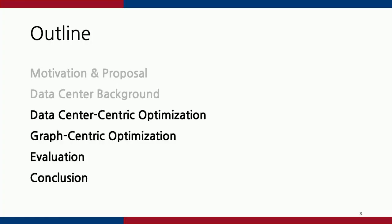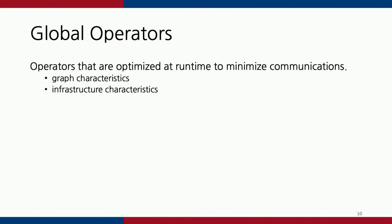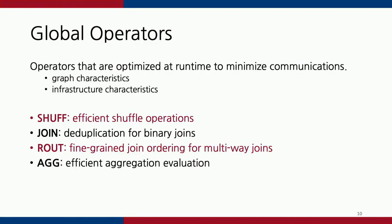I'm going to show how we optimize query execution for large graph queries by including this data center infrastructure characteristic. Our optimizations are applied at global operators within the execution specifications, which are compiled and optimized from the datalog queries. The global operators are the set of operators we identify as the performance bottleneck to large-scale graph query processing. We optimize those operators at runtime by looking at graph characteristics and infrastructure characteristics. There are four global operators; in this talk I'll focus on two: shaft, which is for efficient shuffling, and route, which optimizes multi-way join queries.